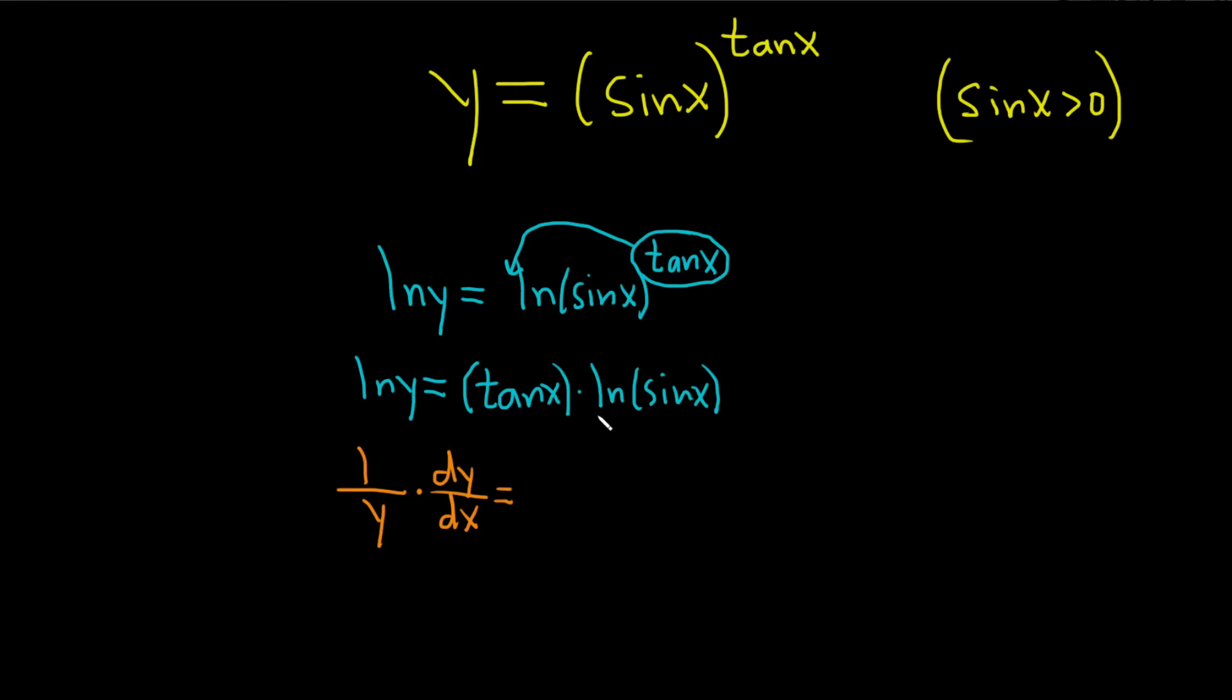Here we have to find the derivative of this product, so we'll use the product rule. Recall if you have two functions, f and g, and you multiply them together, and you want to find the derivative. Think of f as your first function and g as your second, and the formula says it's the derivative of the first, times the second, plus the first,